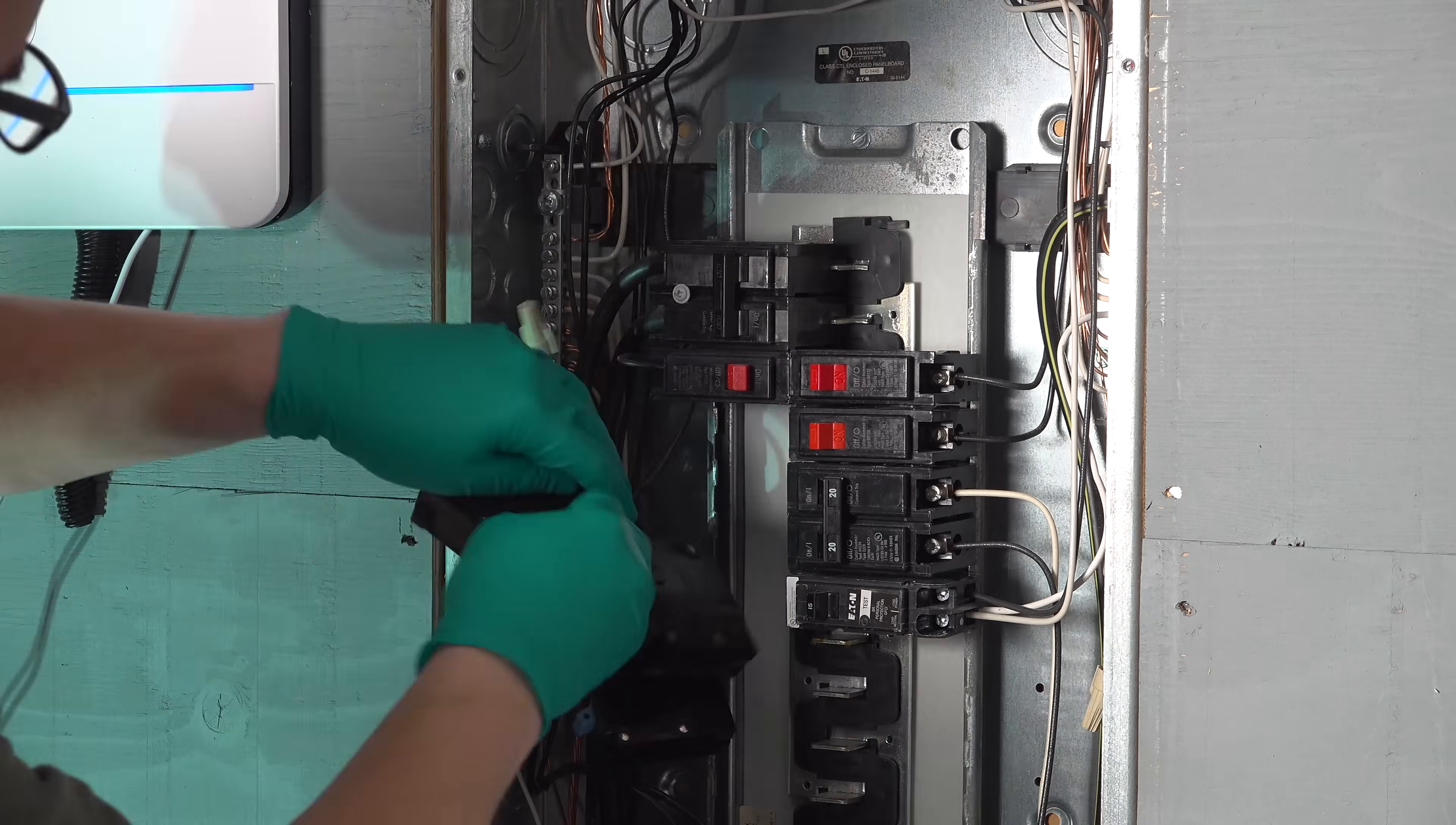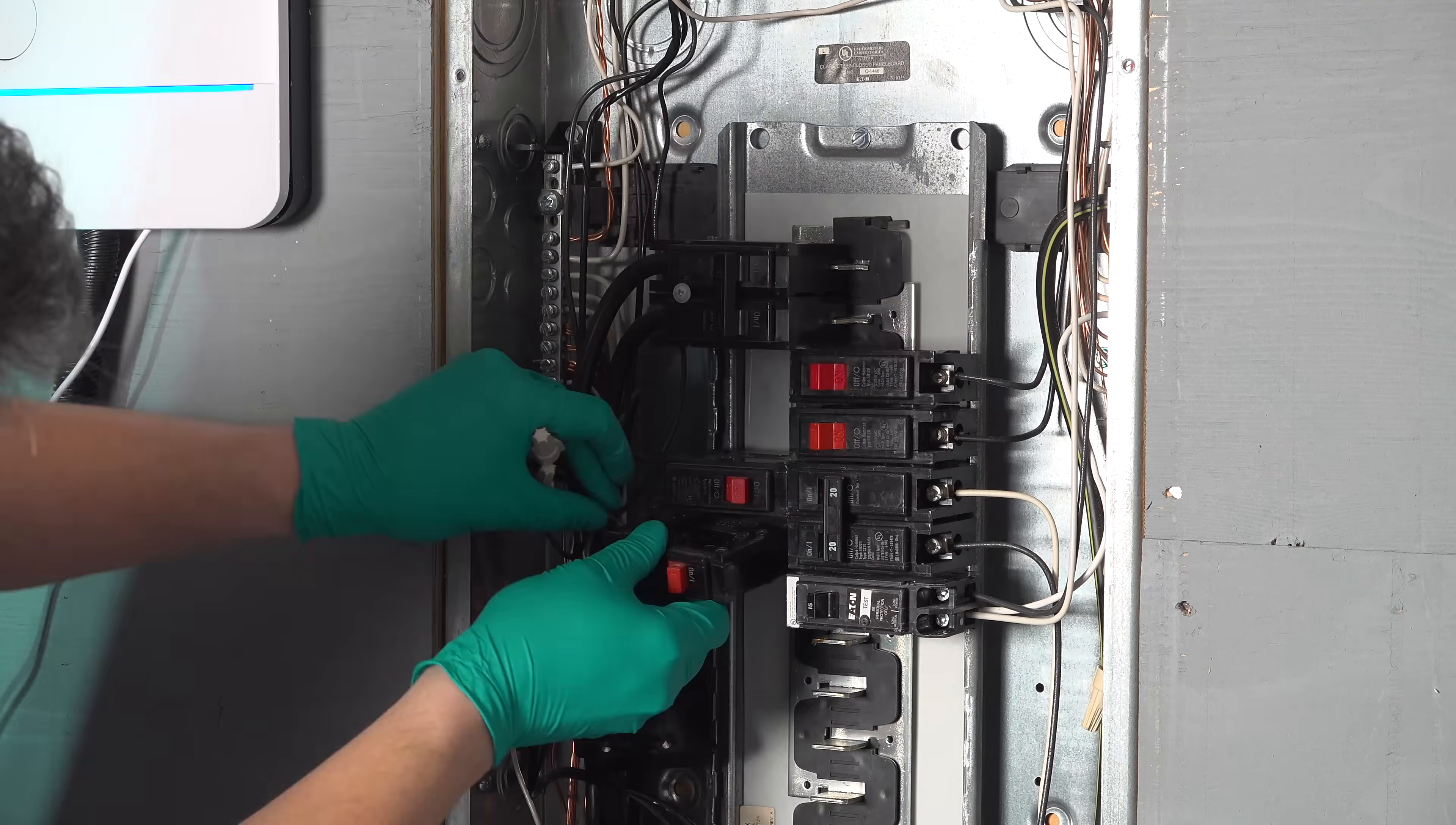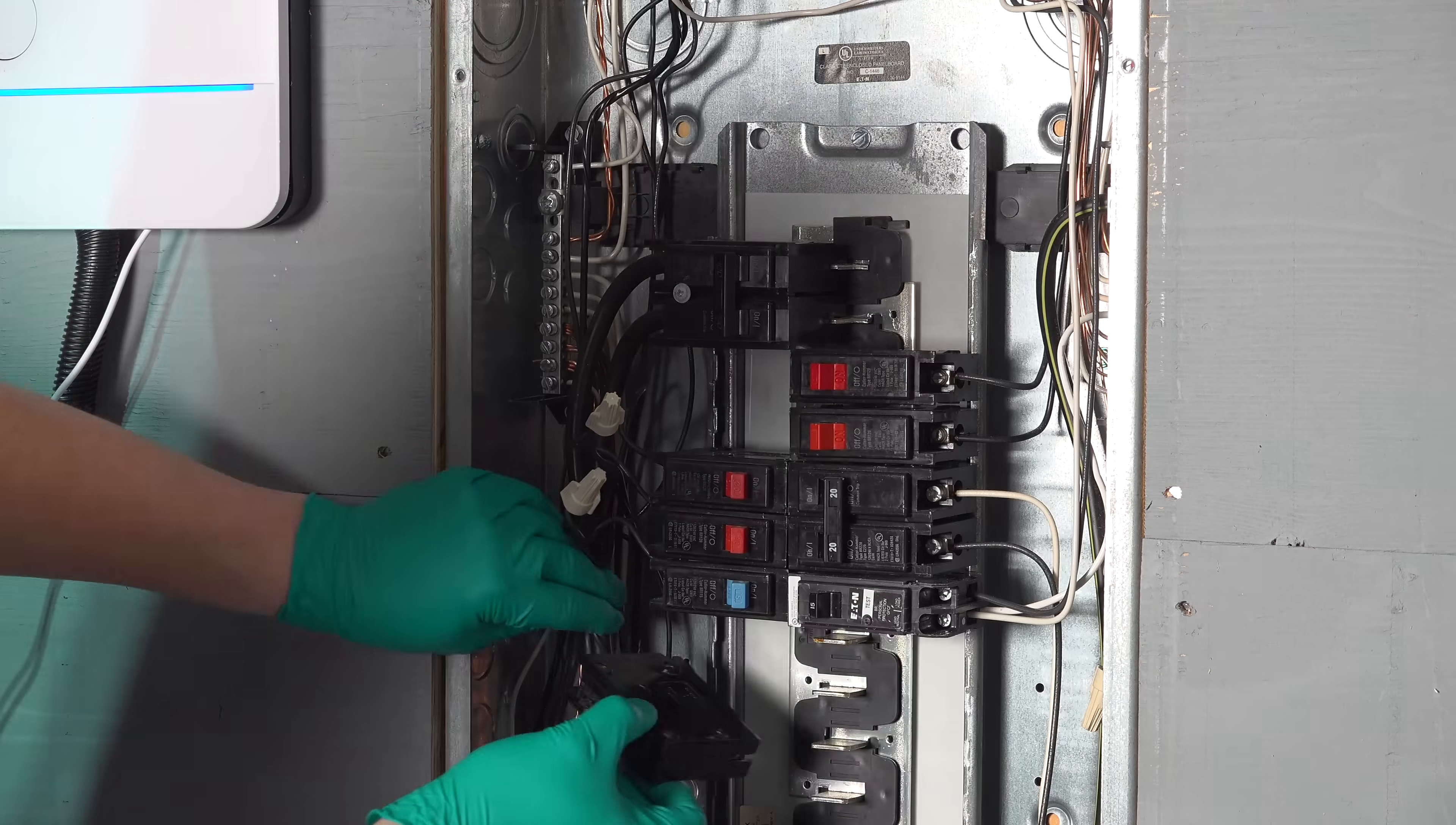If your wire doesn't have enough slack, you do have a couple of options. You can use wire nuts inside your panel to extend the wire further so you can move the breaker somewhere else.